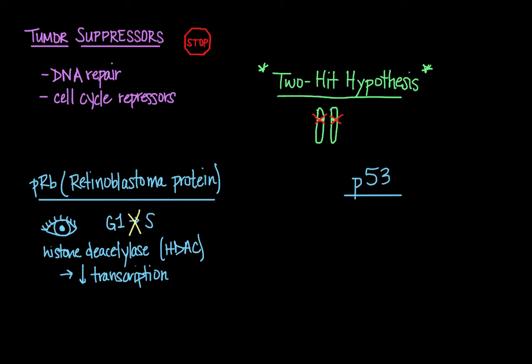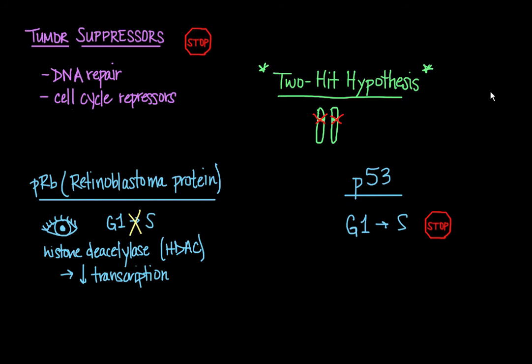And so P53 activates DNA repair proteins when DNA has sustained damage. And it can also arrest growth by holding the cell cycle hostage, if you will, at the G1 to S regulation point. And this gives DNA repair proteins some time to fix the damage and allow for continuation of the cell cycle.